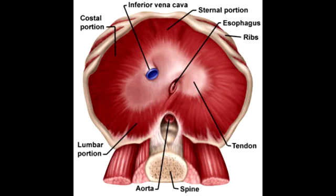What is the mnemonic to help you remember that the diaphragm is innervated by these cervical nerves? The mnemonic is: C3, C4, C5 keeps the diaphragm alive.